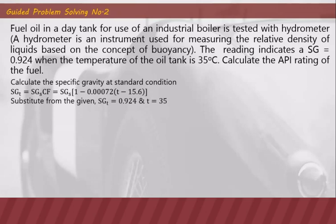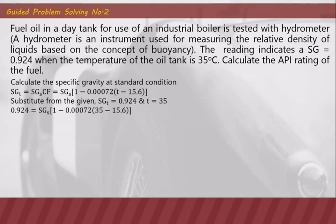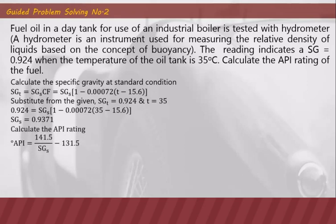Substituting SGP = 0.924 at temperature 35°C into the correction factor formula, we compute SGS = 0.9371. Using the relationship between SGS and degrees API — degrees API = 141.5/SGS − 131.5 — we substitute and obtain an API rating of 19.5 degrees API.